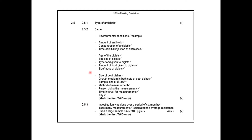For 2.5.2, look how many fixed variables they have — and it must start off with the word 'same.' The memo says mark the first two only. Make sure you know your two best answers. Same species of piglets, same age of piglets. I also taught you same method of measurement and same person doing the measurement. The other variables are much harder and more specific to the experiment. For 2.5.3, ensure reliability: investigation was done over a period of six months, they took many measurements, they used a large sample size — 100 piglets — and calculated the average resistance. That comes straight from the text.